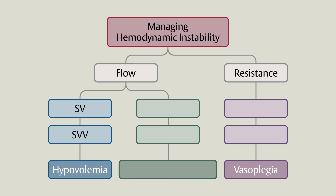Vasoplegia typically presents as a high-output, low-afterload picture, with a decreased SVR — systemic vascular resistance — often in the presence of hypotension. This is an appropriate time to consider the addition of common vasopressors, whose management may be optimized utilizing dynamic arterial elastance, or EA-dyne. You can find more information on EA-dyne using the link in the description below.